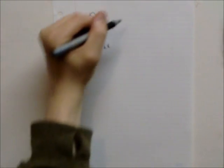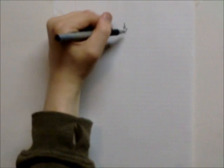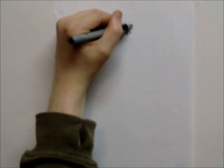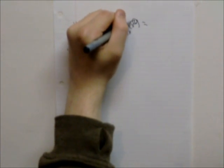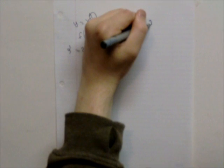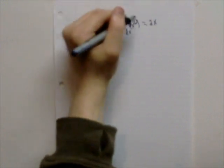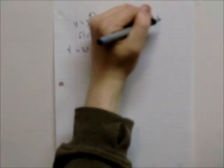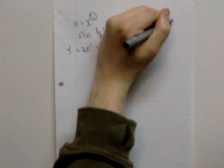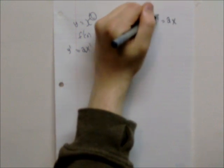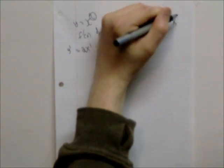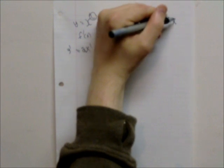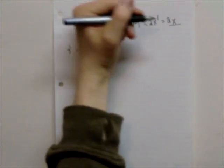Similarly, d/dx x squared equals the 2 in front, 2x. You minus the 1, so 1 equals 2x. And you can replace the 1 with nothing because that's assumed that there's a 1 there. So there you go, 2x.